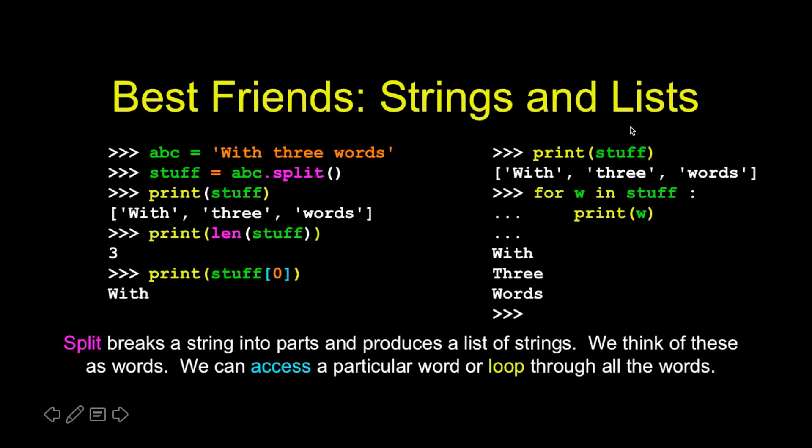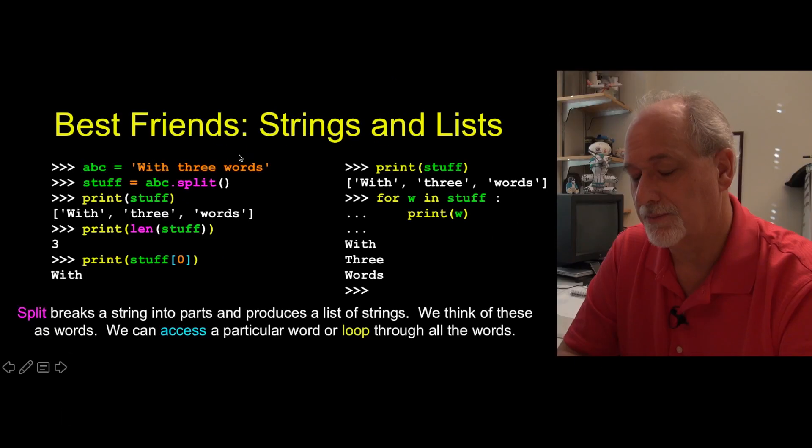You can also loop through them, so you can split these things into stuff as a word and then go through with W, and it's going to go through. W's going to take the successive with three words. And so you can make a loop by reading some data, splitting it, and then writing a for loop, and it's effectively going through the words in that line of data. And so that's a really powerful concept that we'll use in a lot of the programs that we're going to write.